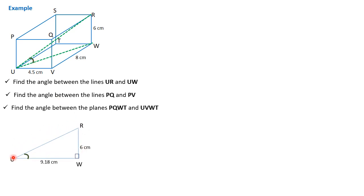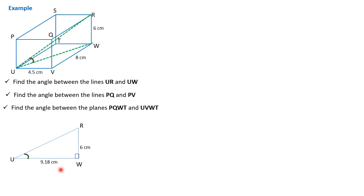We have U,R and U,W, and the angle between the two of them is what we're looking for. Now to begin, we need to look for the distance U to W. The distance U,W can only be gotten using Pythagoras' theorem: UV squared plus VW squared. We have 4.5 squared plus 8 squared — square root of that gives 9.18. So the distance from U to W is 9.18.